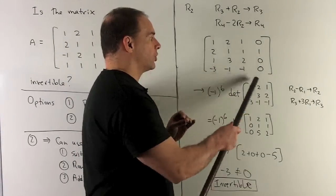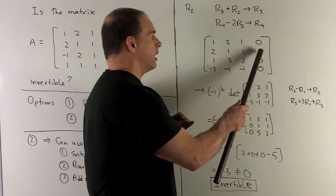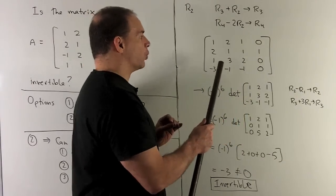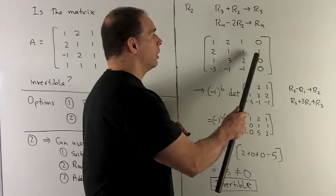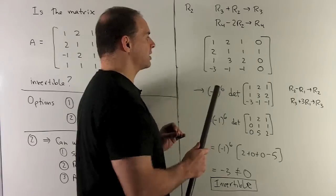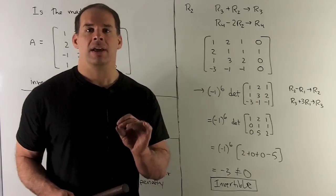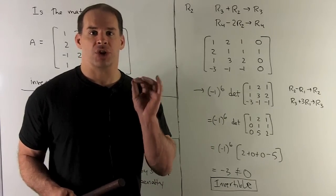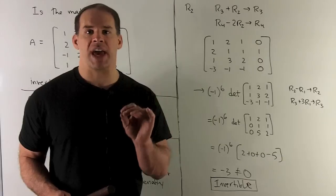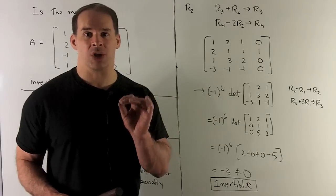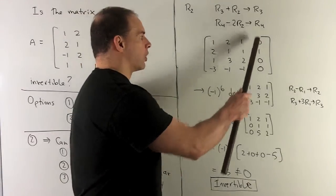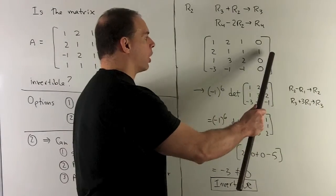We're going to have the 1. We're going to multiply it by minus 1 to the 2 plus 4, which gives me a 6. And then we're going to take the minor. So I take the determinant of what I get when I cross out the row and column that our entry lives in. So I cross out that column, cross out that row.